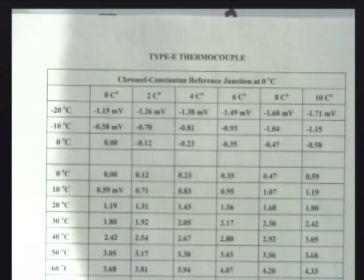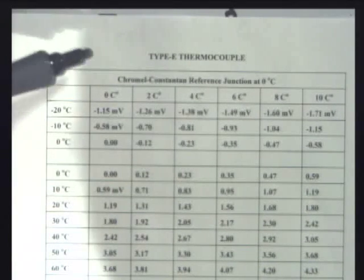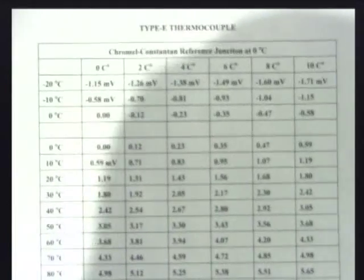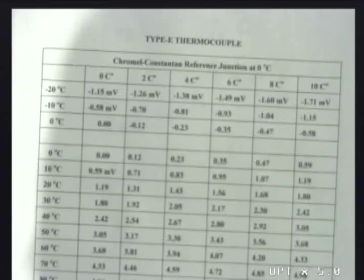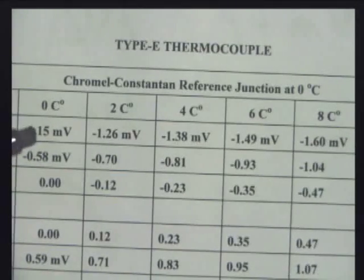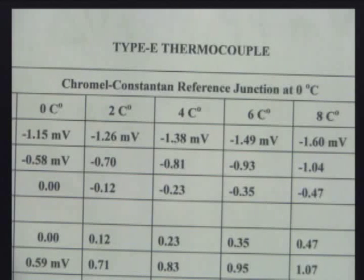Here it is. And this is in the textbook, type E thermocouple. You use different instruments, different materials. This one is a chromel-constantan. And it assumes your reference junction's at zero, but we can fix that.